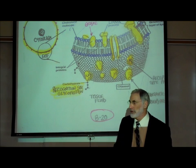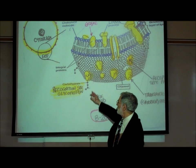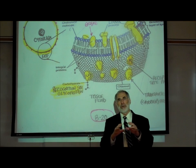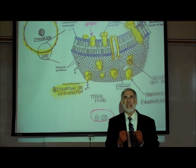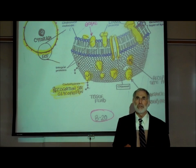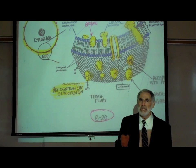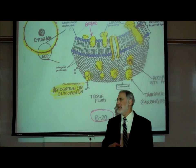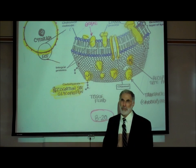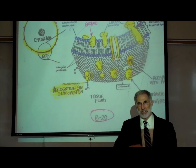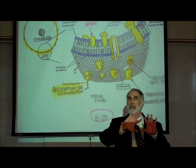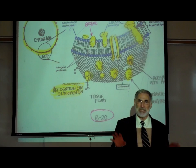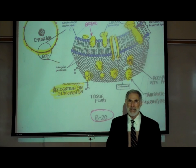Glyco, as in the word glucose, refers to these sugars. Every person genetically produces a unique set or combination of glycoprotein recognition sites that appear on the outer surface of the cells of their body.